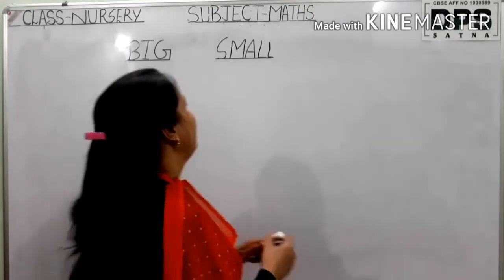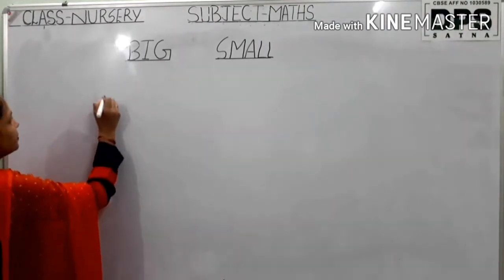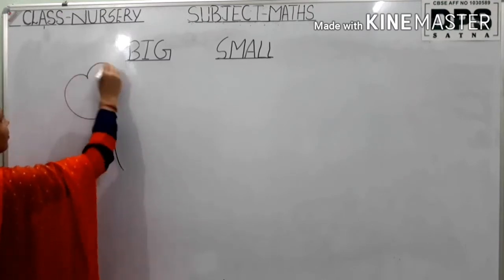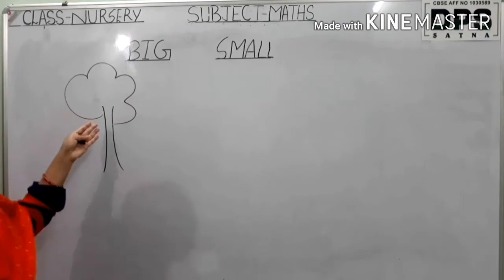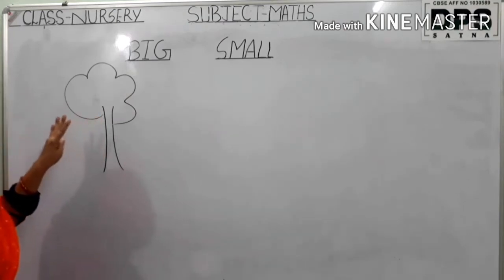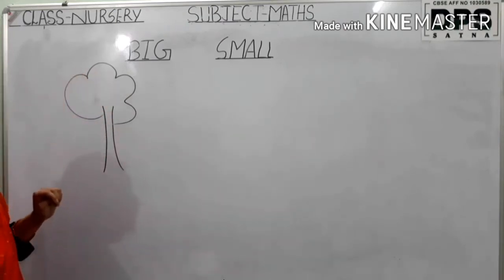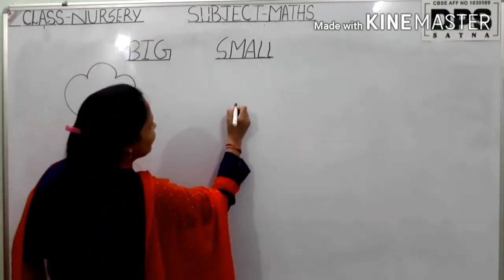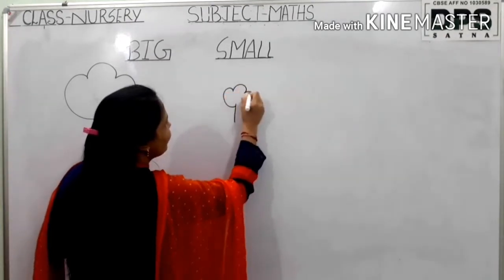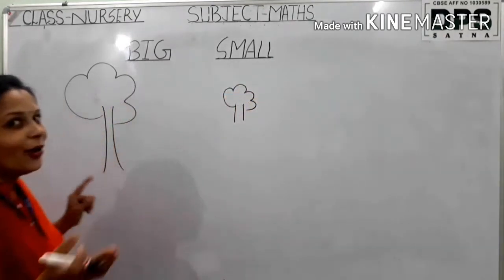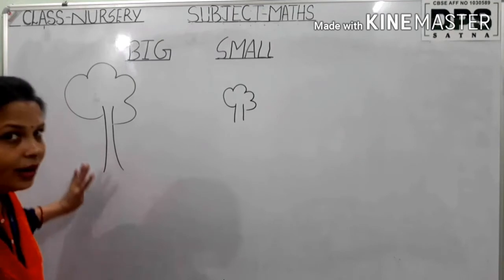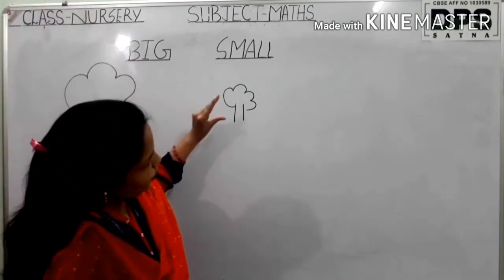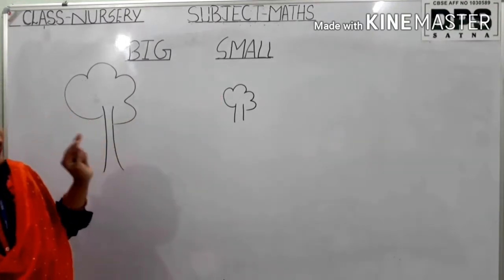Now look here. What is this? A tree. This is a tree? Yes. Then what is the shape of the tree — big or small? Look here. Now I make a small tree. Now you tell me: the big one is big, and the small one is small.